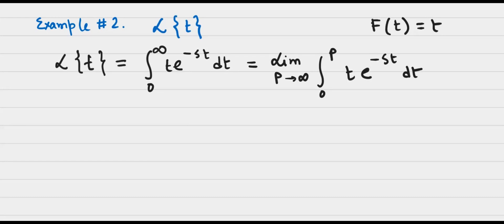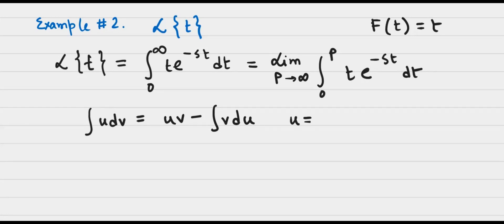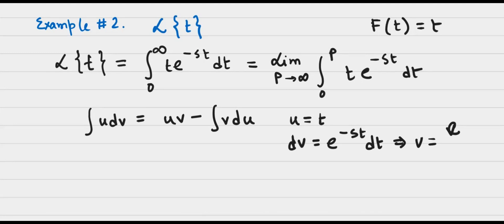Now is the time to employ integration by parts. If you remember, the integration of u dv is equal to u v minus the integral of v du. For our purpose, u is t, and dv is equal to e to the power negative st dt. If this is the case, then we can find v, which is simply the antiderivative of e to the power negative st, giving v equals e to the power negative st divided by negative s.